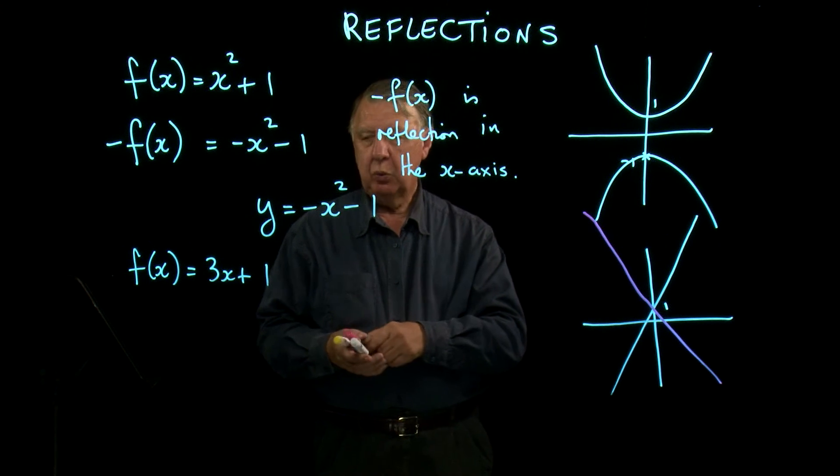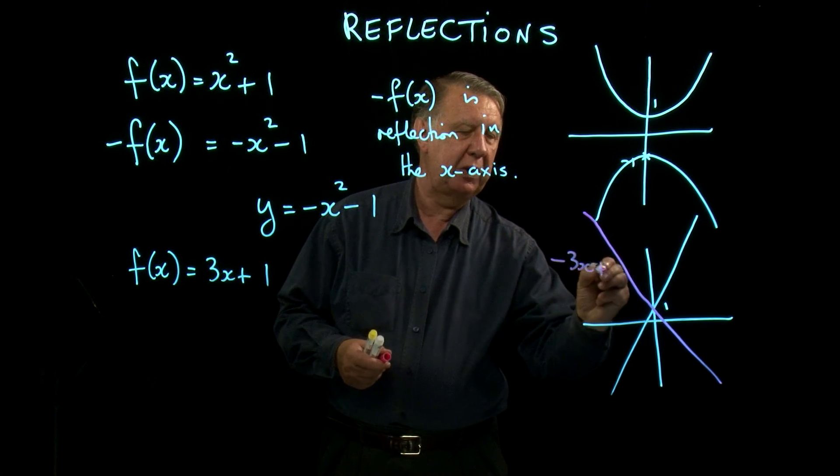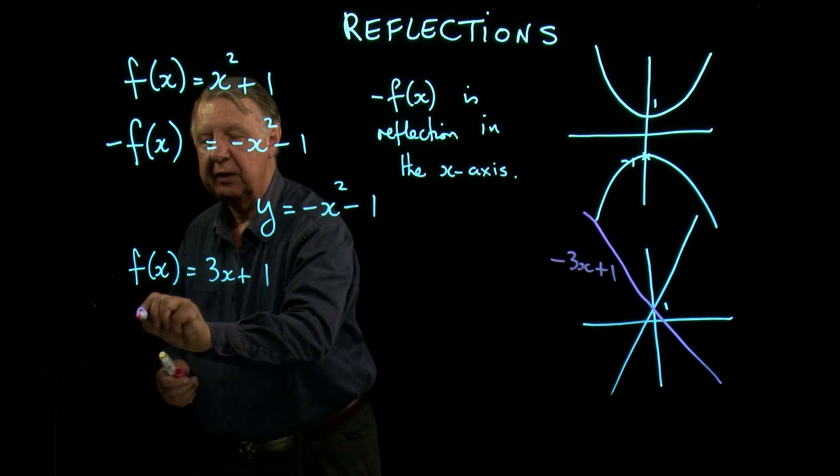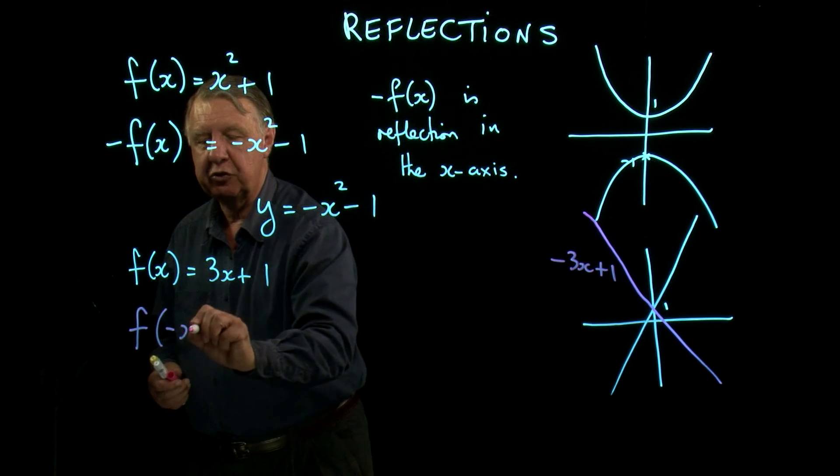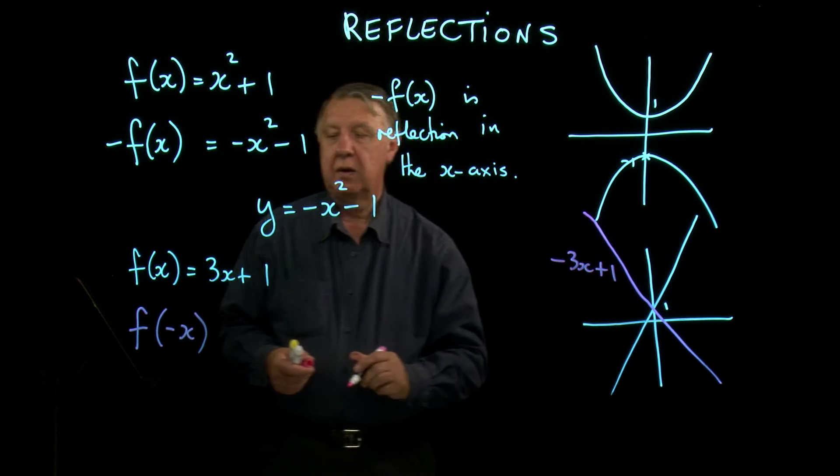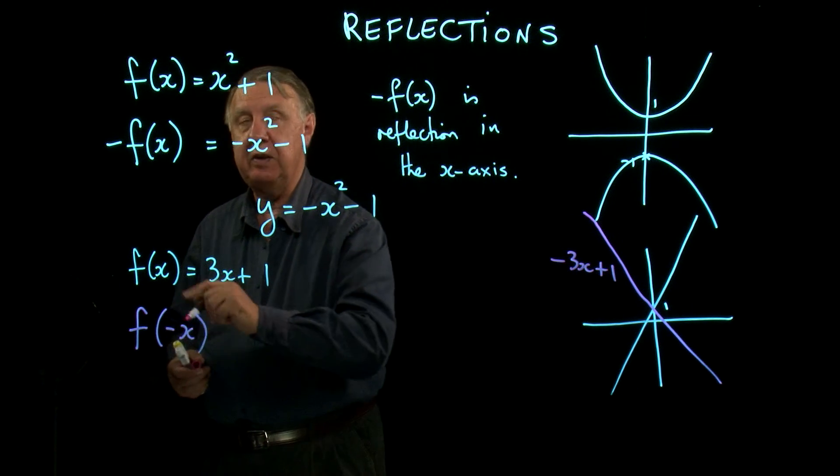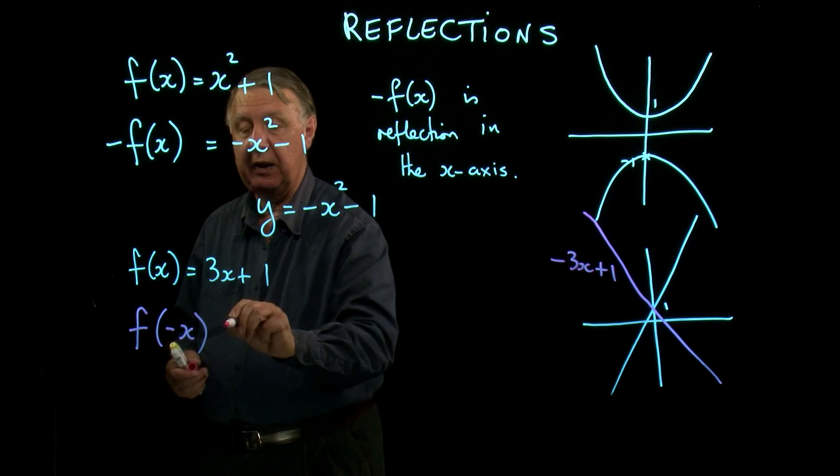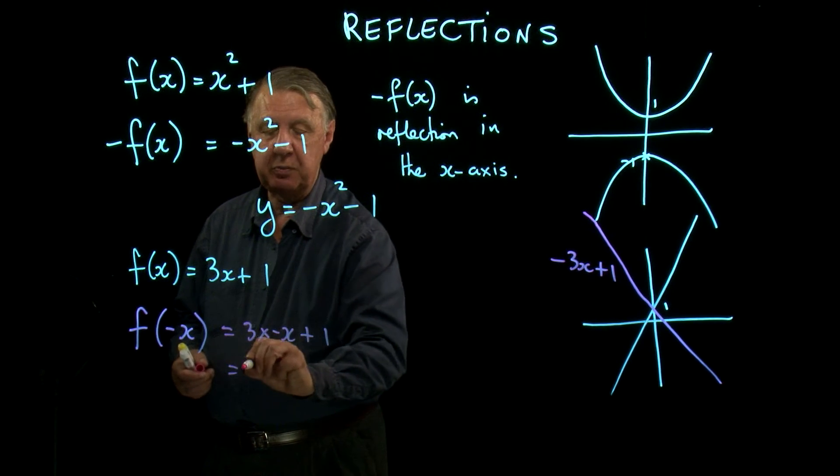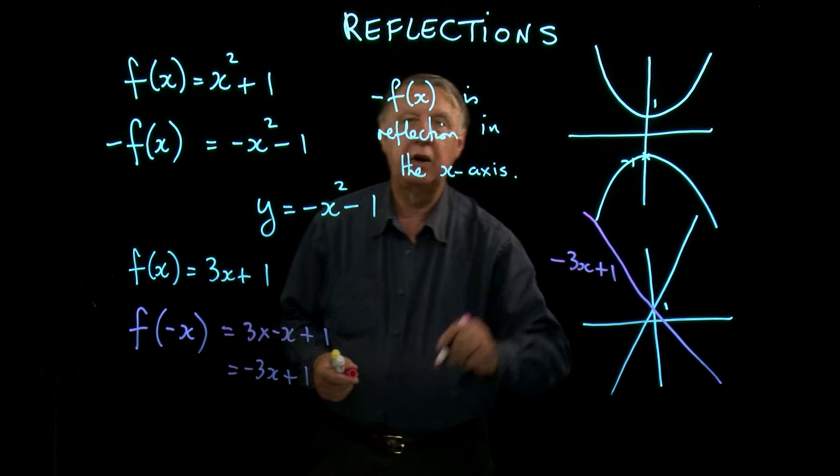So we are interested in ending up with negative 3x plus 1. How can we do that? Well, quite simply, if I find function negative x, then that means replace x with whatever is in here. So replace x with minus x. So you get 3 times minus x plus 1, which is minus 3x plus 1, which is the required answer.